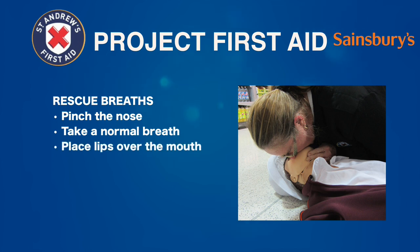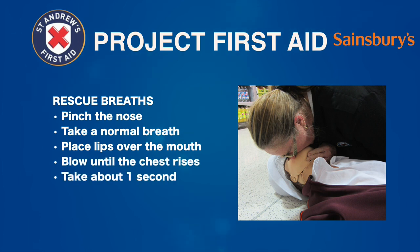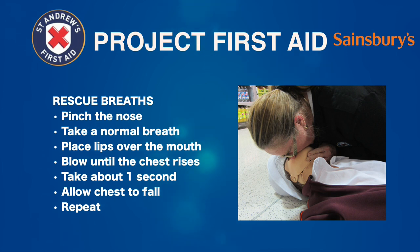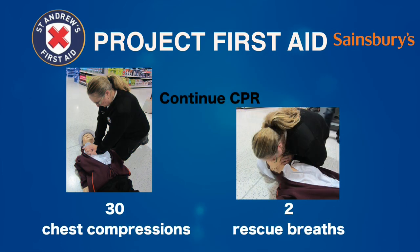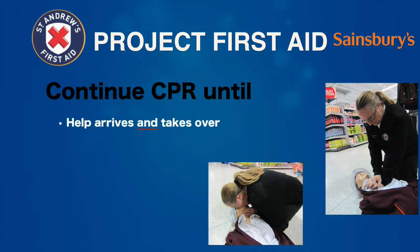Make a seal with your lips over their mouth and blow until the chest rises — about 1 to 2 seconds. Stop and let the chest fall, then give a second rescue breath. If the breaths don't go in, check you have their head tilted properly. Don't attempt more than 2 rescue breaths — move on to the next round of chest compressions. Continue with chest compressions and rescue breaths at a ratio of 30 to 2. Keep going until help arrives and takes over. Do what the ambulance crew tell you.